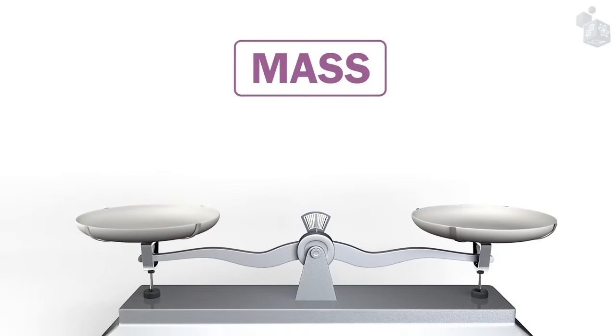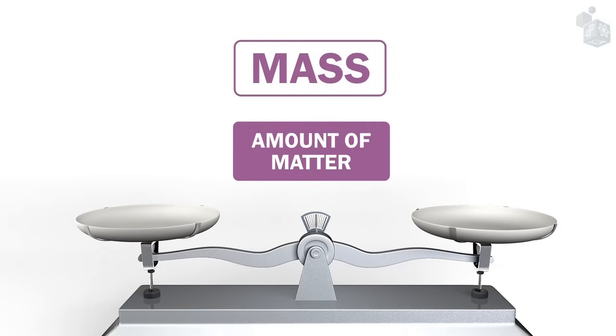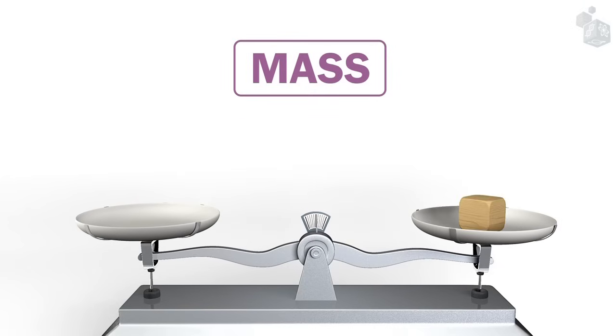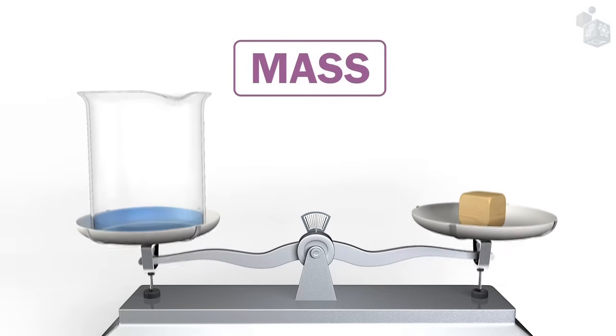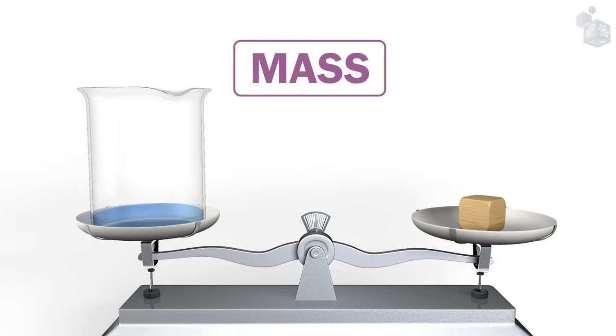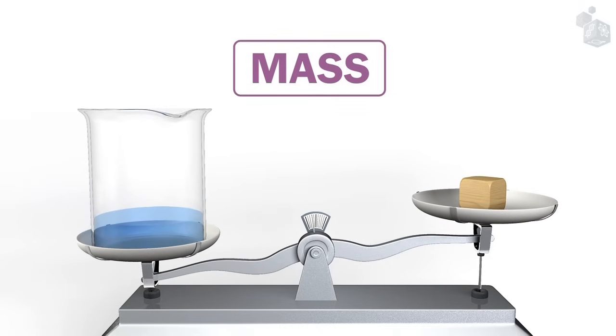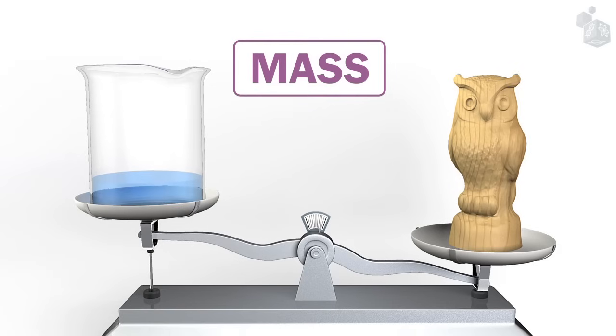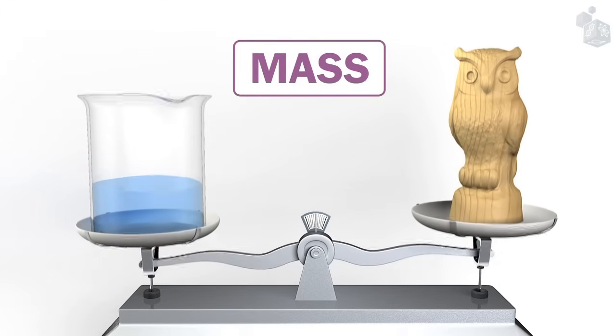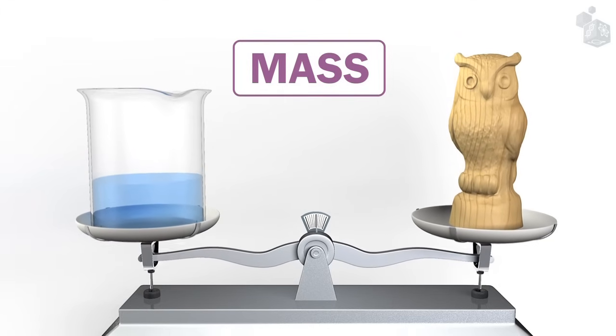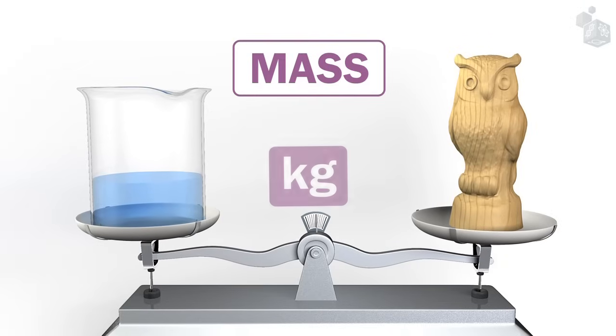The mass of an object is a measurement of the amount of matter it contains. The greater the matter of an object, the greater its mass. Mass is measured in kilograms or its derived units.